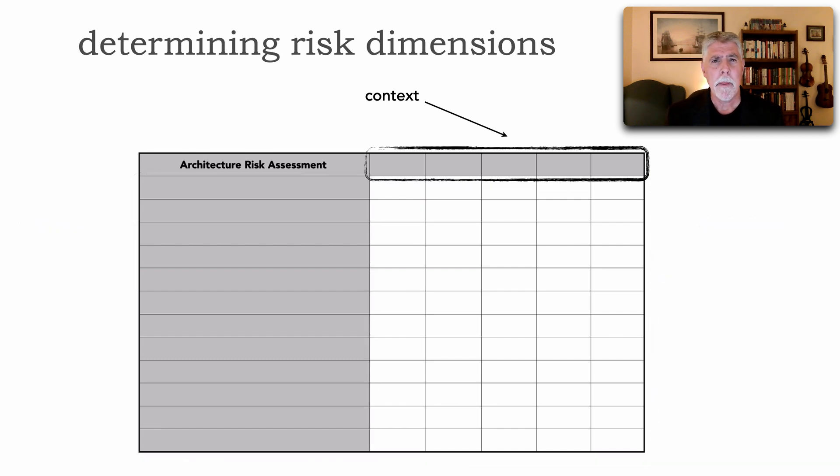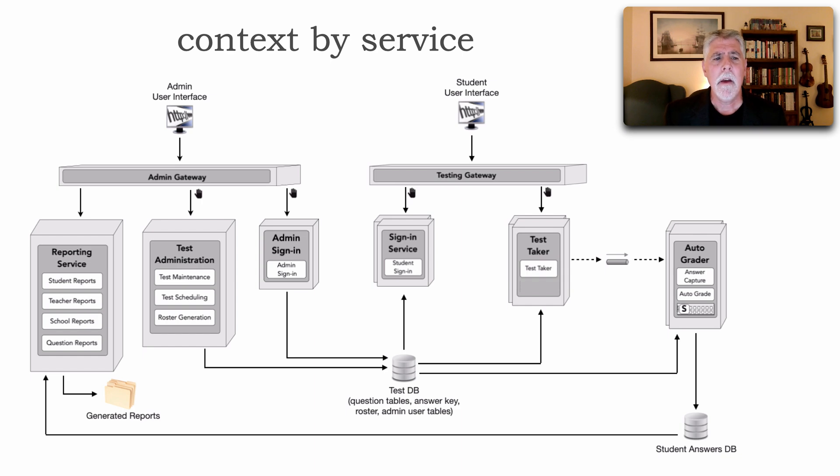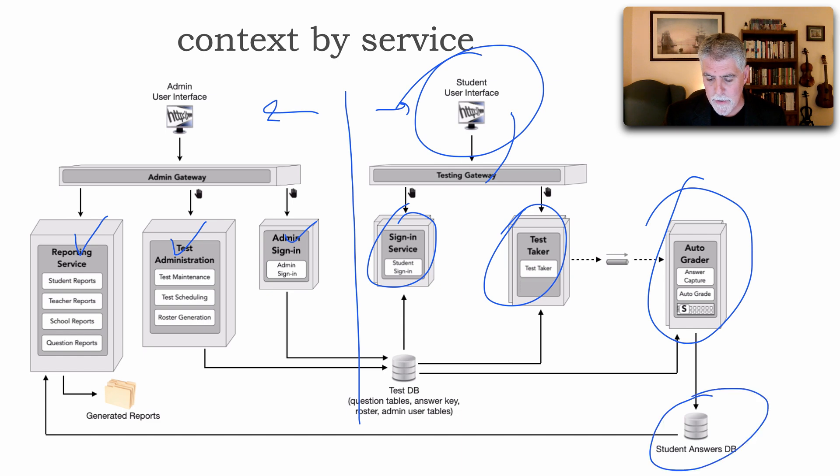So let's talk about the context first. Now the context can be of one of two forms: we can do a context by service or context by a domain area of the application. I'm going to use an example here of a fictitious application that allows for standardized testing of students. Notice here what we have—two separate portions of the application: a student piece and an admin piece. Over on the administrative portion we've got a lot of reporting functionality, test administration to create tests and update them and schedule them, and of course security and sign-in for admins. Over on the testing side we've got a user interface that comes through a gateway where students sign in and then actually take a test by getting questions presented to them and also the answers recorded. And then we've got an auto grader which records them and stores the answers in the student database.